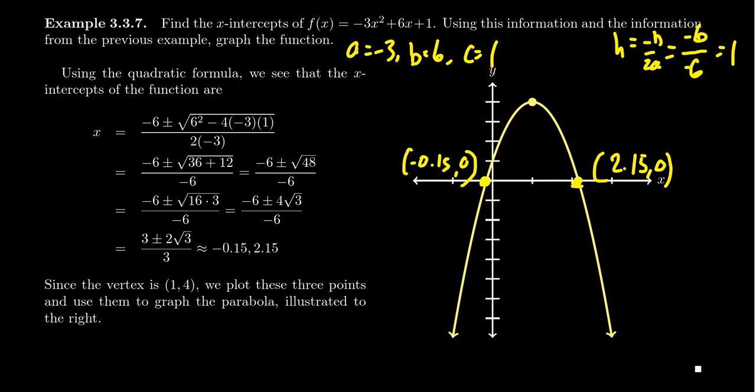And then once we have 1, we can plug that into the formula k equals negative 3 plus 6 plus 1. And we see that the vertex is going to be 1 comma 4. 1 comma 4, that's given right here.